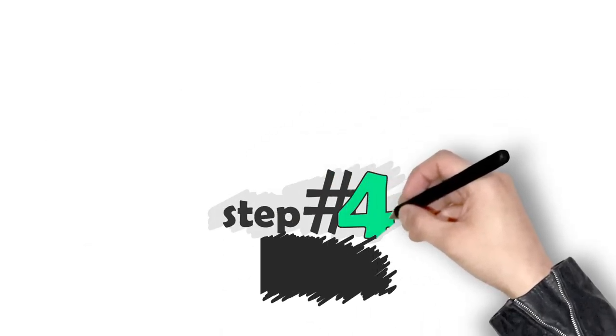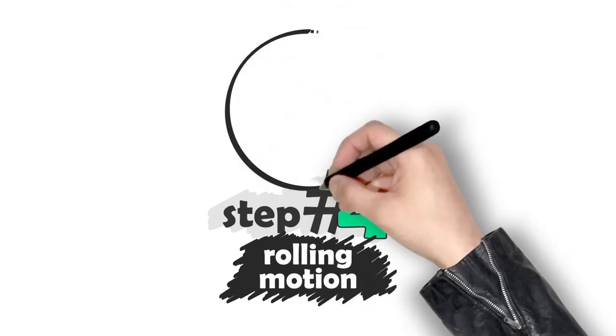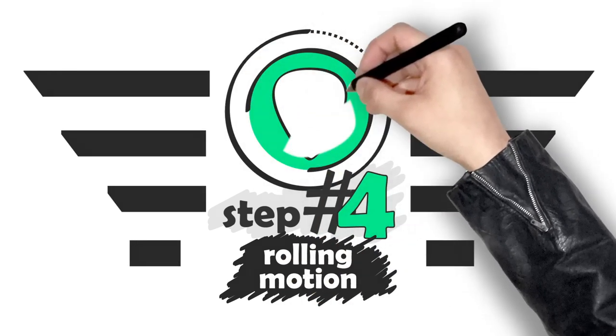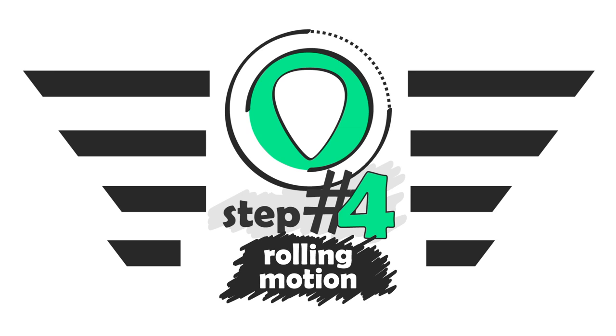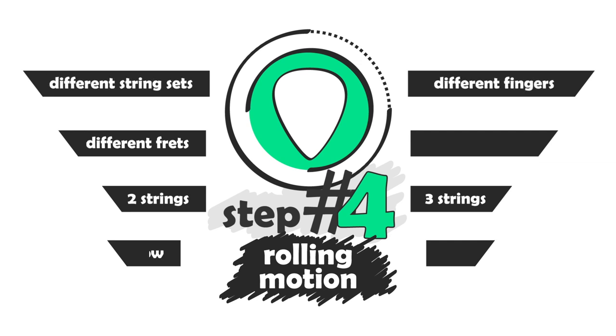And now step four. Once you know how to do the motion, practice it in as many different contexts as possible. That means practice the finger rolling motion on two strings, on three strings, on different frets, on different string sets, even with different fingers. Practice it slowly, practice it fast, practice it at medium tempos, and rotate through the different contexts many times in the same practice session. Switch up the contexts literally every few seconds. And do that even if the previous contexts are not yet mastered.